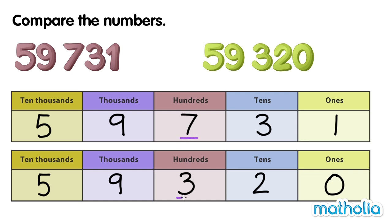7 and 3. 7 is greater than 3. So, 59,731 is greater than 59,320. We can also say that 59,320 is smaller than 59,731.